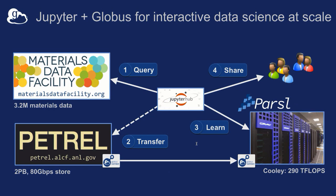We've also done integration with JupyterHub. Jupyter is becoming the de facto tool for interactive data science. Using your existing identity, you can log into a JupyterHub instance on campus, spin up Jupyter servers, run your notebooks, and within those notebooks have access to all Globus services with the same fine-grained security model. An example is from our materials data facility at Argonne, where they built flows to query a big materials data set, move it to Petrel, do analysis using Parsl — a parallel Python scripting library — and then publish it and make it available to the materials research community.